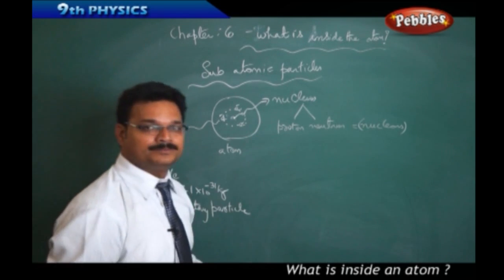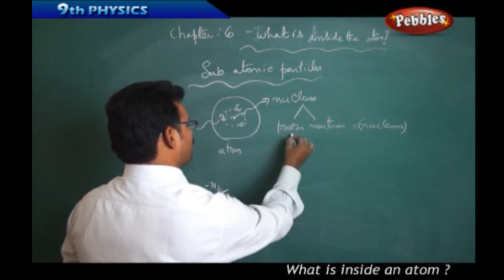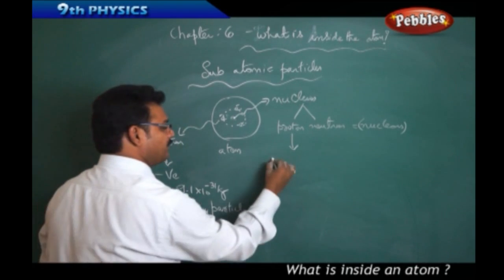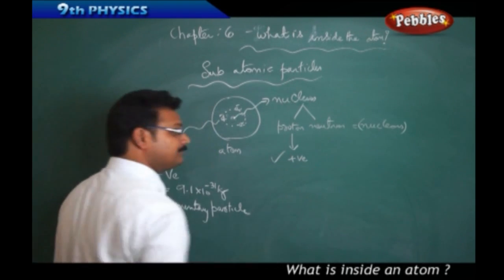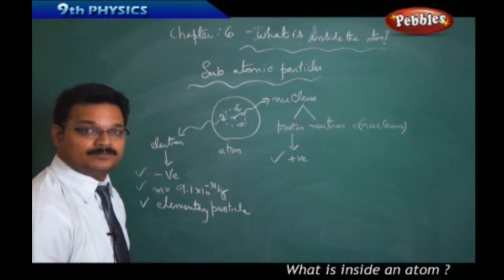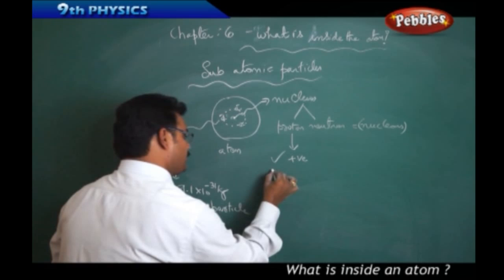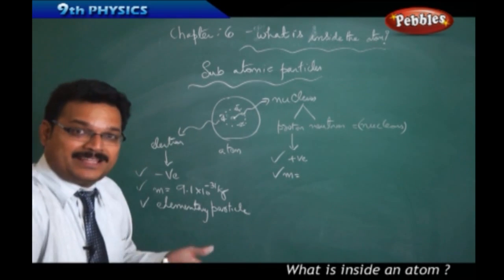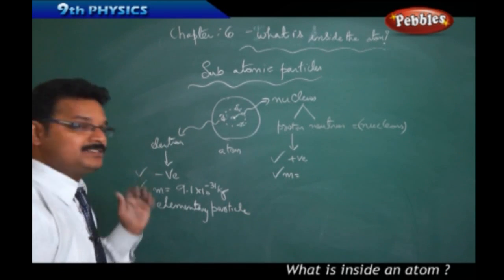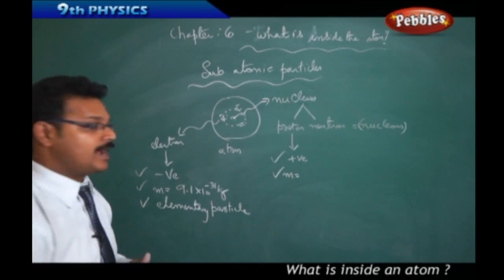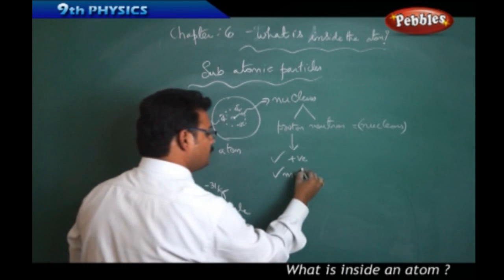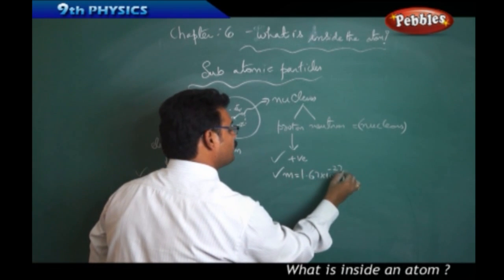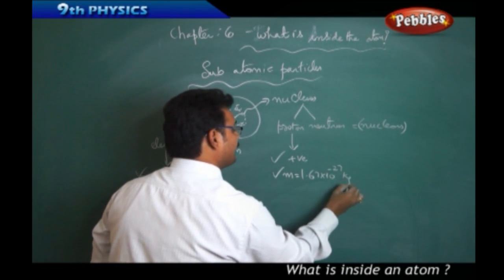Coming to the proton: the proton carries a positive charge. The proton's mass is heavier than the electron's mass, with a value of 1.67 × 10⁻²⁷ kg.